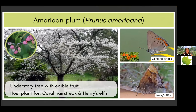American plum has edible fruit — I suggest adding a lot of sugar and making a plum pie. It is a host plant of two butterflies. Interestingly, the caterpillars feed on the flowers and also on the plums themselves, and they feed at night and hide during the day. The coral hairstreak butterfly, as an adult, can forage on any flowers but its favorite is butterfly milkweed. I always suggest that if you plant American plum, also plant butterfly milkweed to support this butterfly throughout its whole life cycle. The other butterfly to mention is Henry's elfin, which has astonishing camouflage to bark.